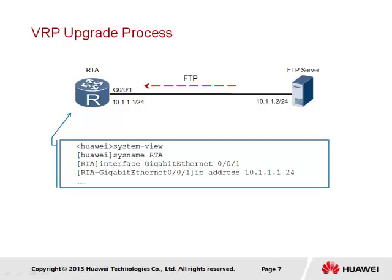Here is an example of how the upgrade process is performed where the device supporting VRP acts as a client and wishes to connect to a file transfer server. The first steps involve establishing the system name for the device and assigning an IP address to allow IP communication between the router and the server. In this example, the router named RTA acting as a client and the FTP server are assigned as part of the same network, with the address 10.1.1.1 and mask 255.255.255.0 configured on RTA, as indicated by the /24 prefix value.